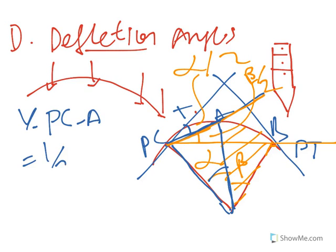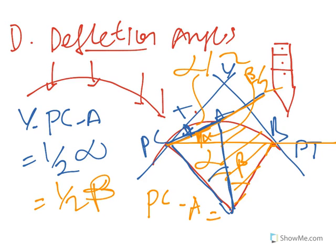VPCA is equal to half alpha. PCA is equal to half alpha.